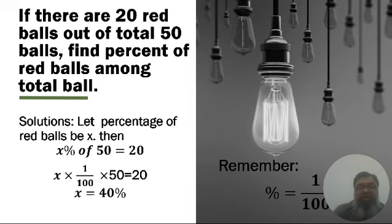The percent symbol has a value of 1 by 100, so we can replace it. x multiplied by 1/100 multiplied by 50 equals 20. We can simplify: 50 and 100 can be cancelled, dividing by 2.